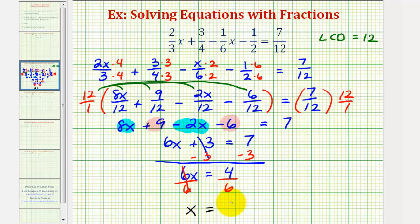So we have x equals 4/6, but 4 and 6 do share a common factor of 2. So 4/6 simplifies to 2/3. So our solution is x equals 2/3.